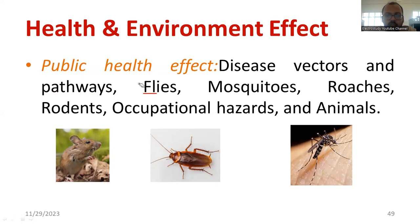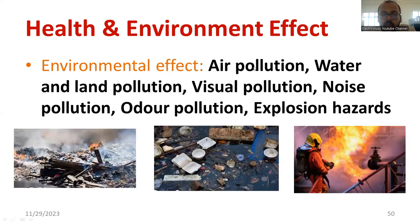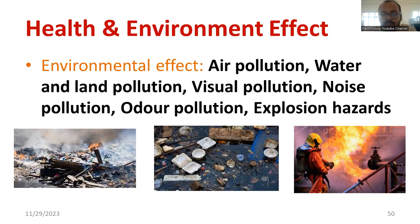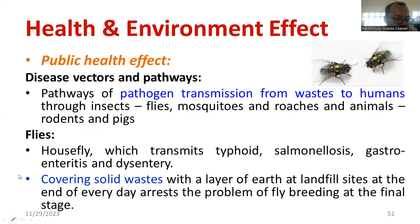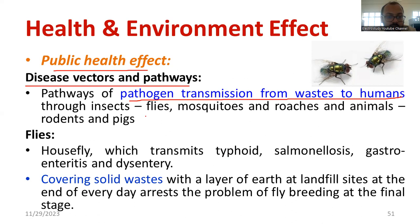I would like to discuss individually how disease factors spread because of poor waste management — you can see the growth of animals and insects. Regarding the environment, we have to consider air pollution, water pollution, land pollution, visual pollution, noise pollution, odor pollution, and explosion hazards. The first public health topic is vectors and pathways — pathogens that transmit from waste to human beings. Examples of disease vectors are flies, mosquitoes, roaches, animals, rodents, and pigs.